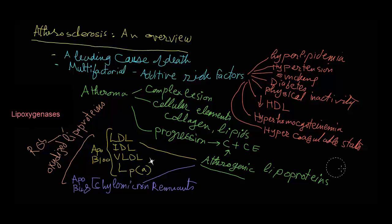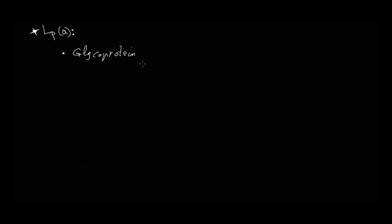Oxidation takes place by reactive oxygen species produced by tissues and also by lipo-oxygenases of macrophages. Now we would like to mention a few words about this LDL-like species which is called Lp(a), which is one of the atherogenic lipoproteins.